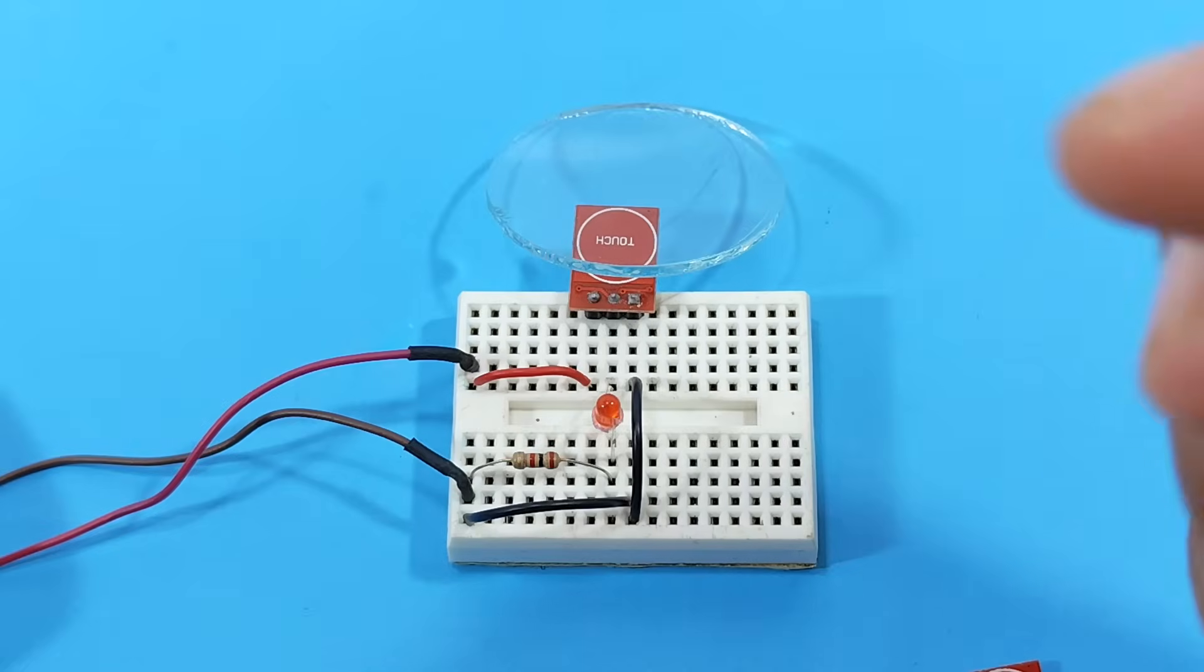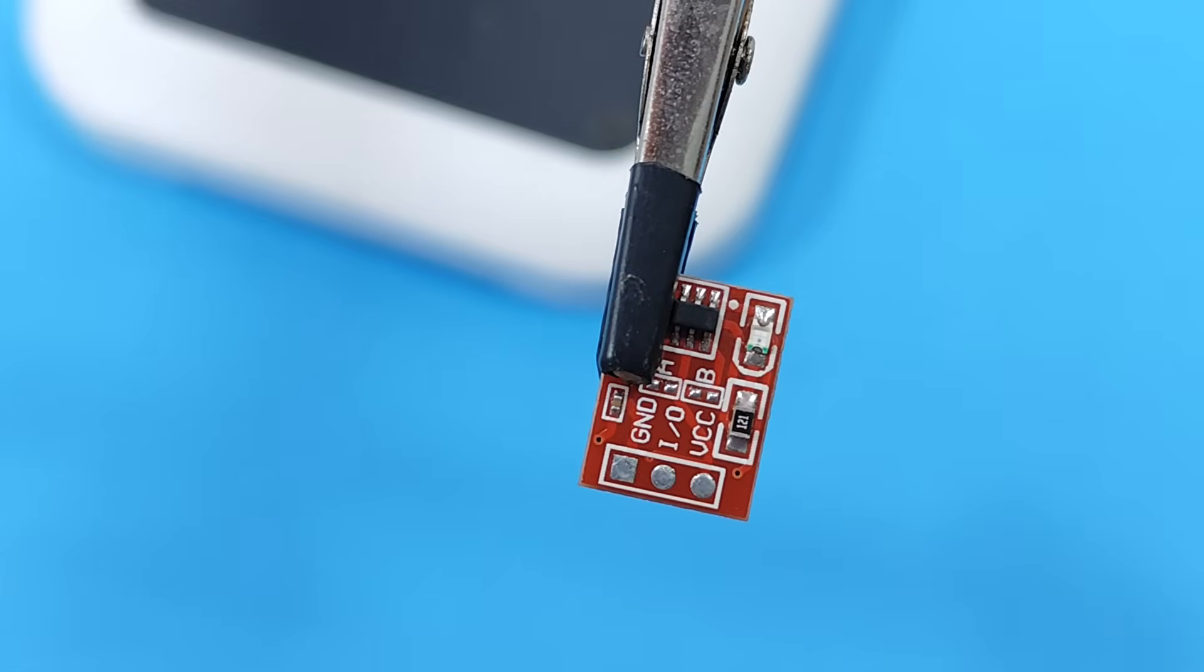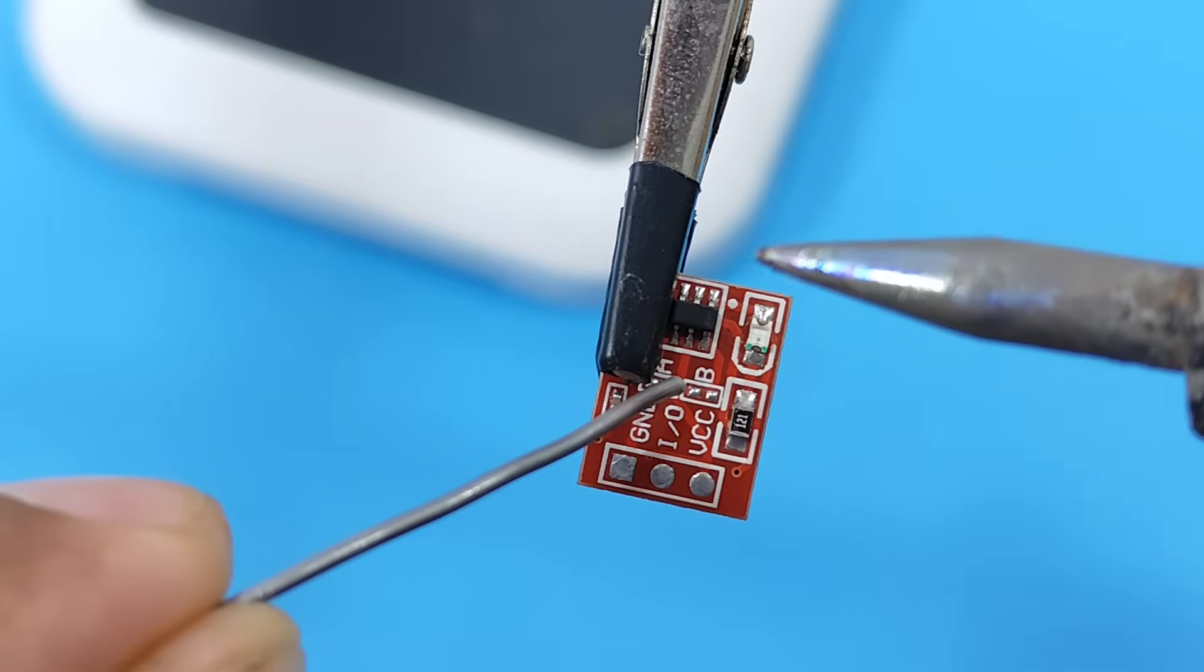We have to find a way to make it work like a switch. To do that, we're going to make some modifications to the sensor. For the sensor to work as a switch, we will join these two points at B.